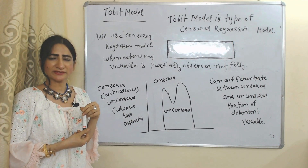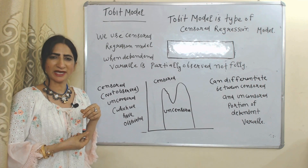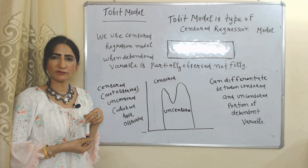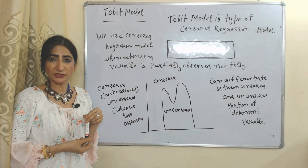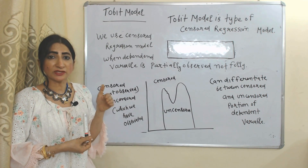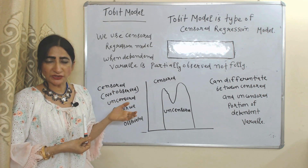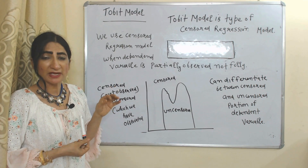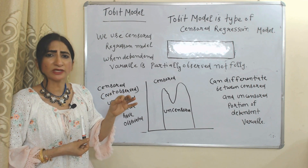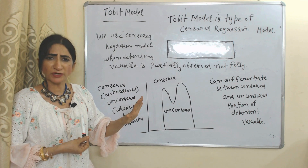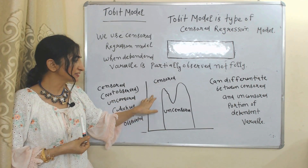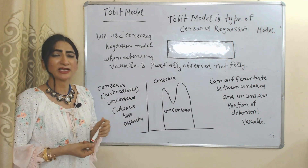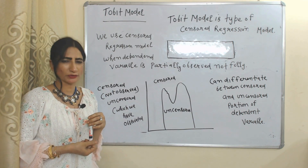The tobit model is a type of censored regression model. We use a censored regression model when a dependent variable is only partially observed, not fully observed. The tobit model can differentiate between the censored and uncensored parts of the dependent variable — this is what makes it very special. The censored part of the dependent variable is the part that is not fully observed, and the uncensored part is fully observed. The tobit model can differentiate between these two parts. That's all about discrete choice models — thank you so much for watching this video. Bye, take care.